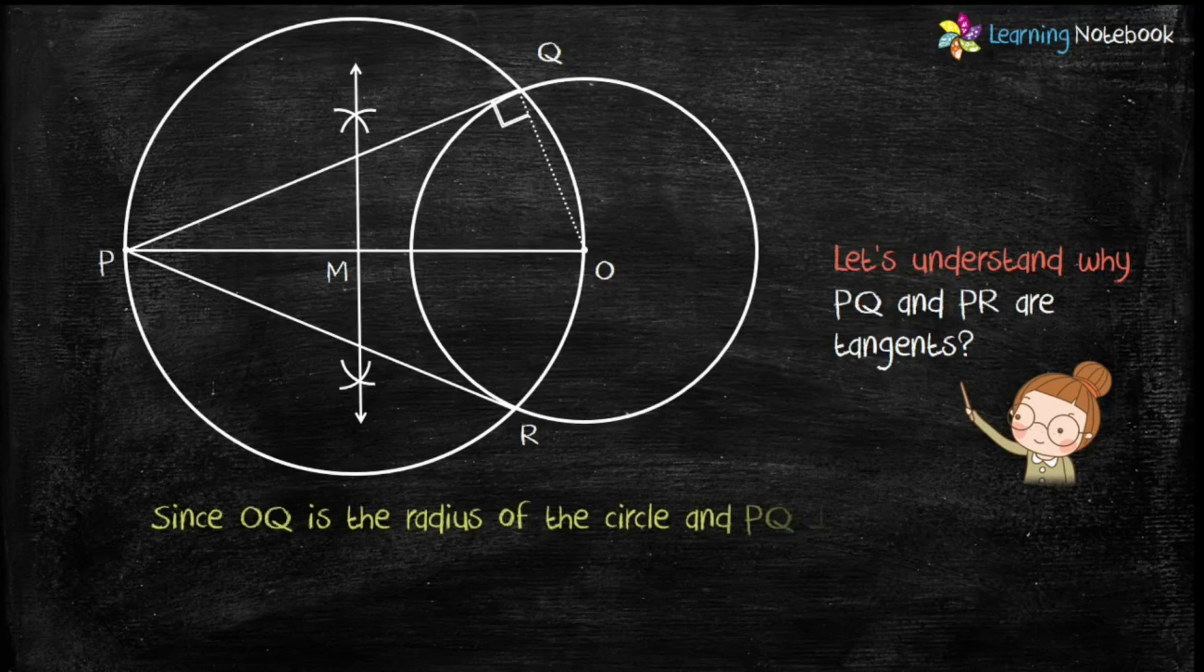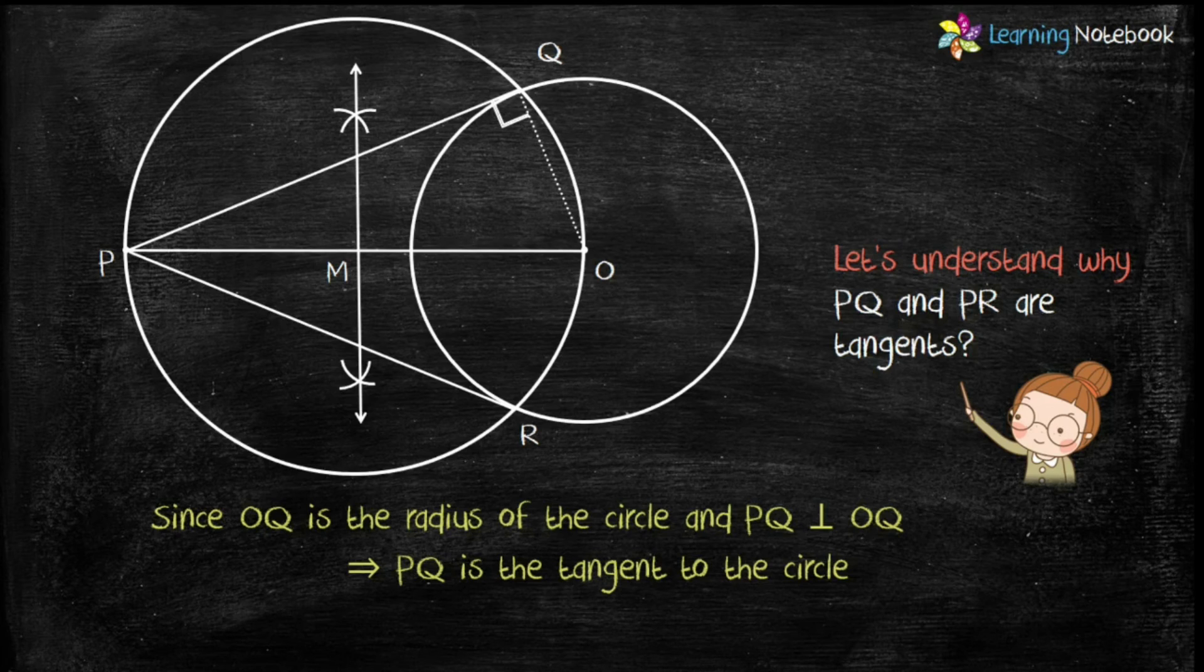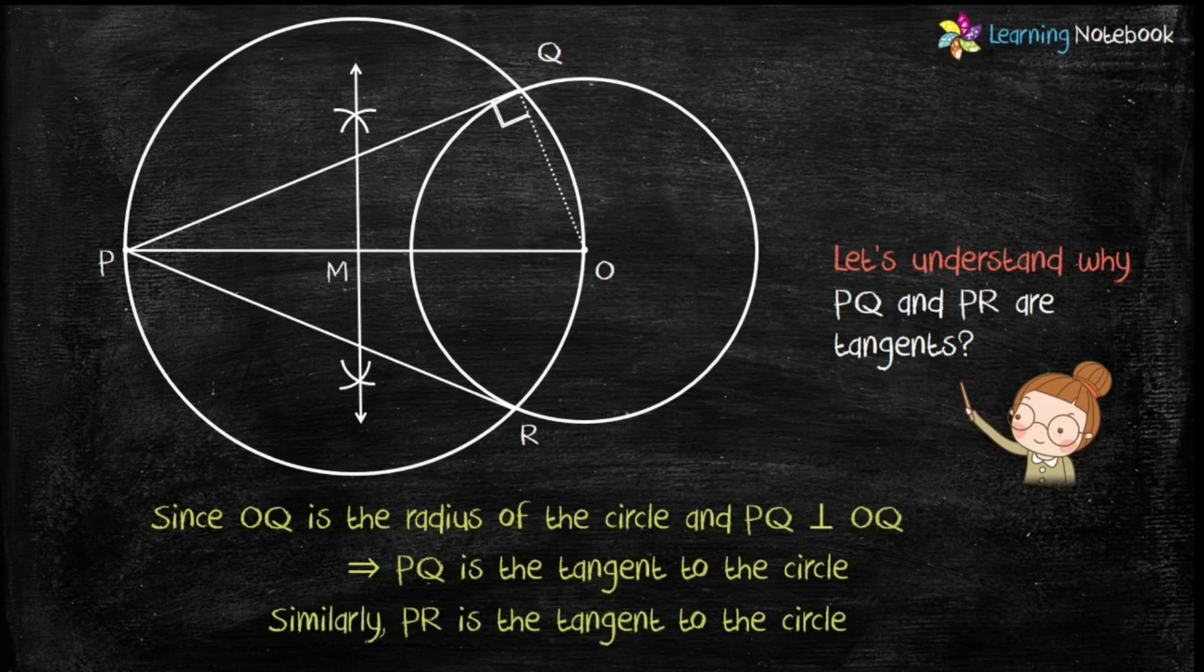And since OQ is the radius of the circle and PQ is perpendicular to OQ, this implies PQ is the tangent to the circle. Similarly, PR is also the tangent to the circle.